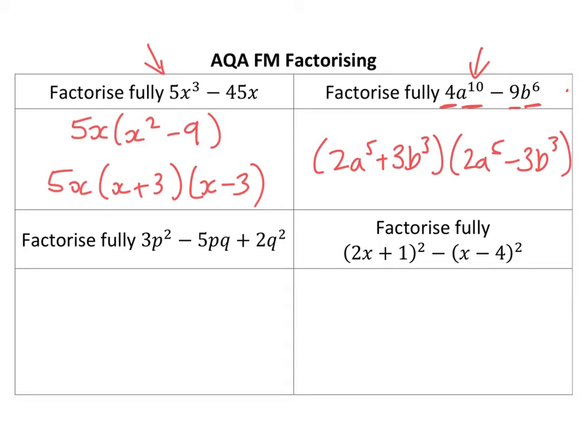The third one down here is a little bit trickier, but it's no different. Now I always use a table when doing this so we're going to do 3p squared minus 5pq plus 2q squared. You know that's going to be 3p and p in either order, I'm going to put them that way around.